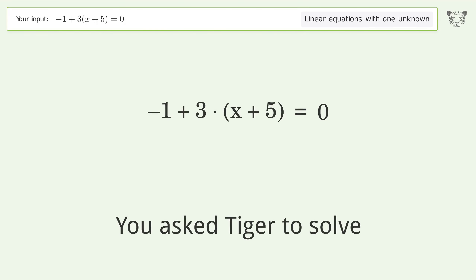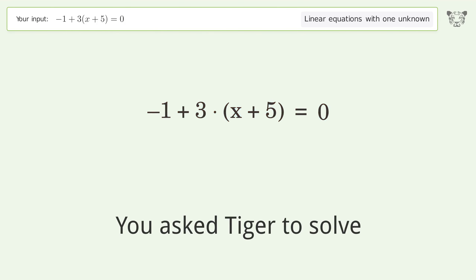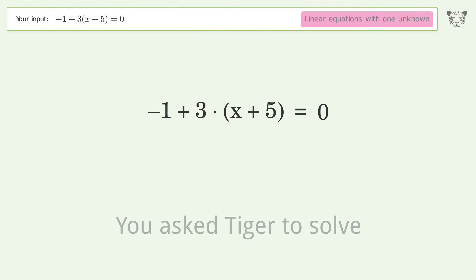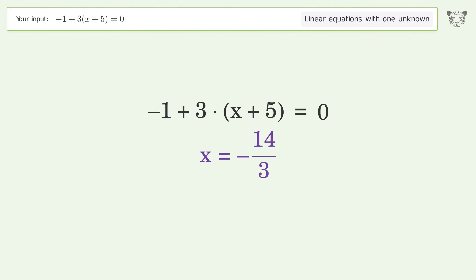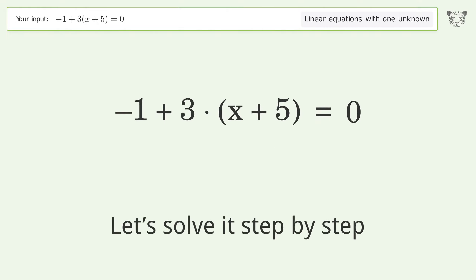You asked Tiger to solve this. It deals with linear equations with one unknown. The final result is x equals negative 14 over 3. Let's solve it step by step.